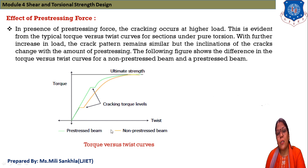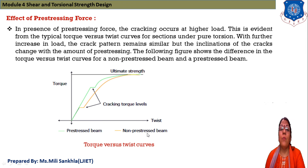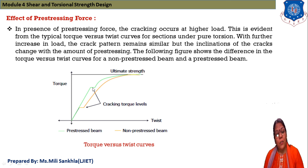In the non-prestressed beam, the yellow curve shows twisting happening early and then continuing up to ultimate strength. For the prestressed beam, the green curve shows no twist initially up to a higher load point, and then after twisting it reaches ultimate strength. This means a prestressed beam performs better than a non-prestressed beam because it delays the first crack. We stop here and in the next session we will solve examples.